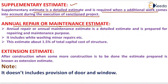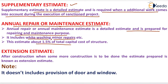The annual repair or maintenance estimate is a detailed estimate prepared for repairing and maintenance purposes only. It includes whitewashing, minor repairs, etc. This estimate is approximately 1.5 percent of the total capital cost of the structure.